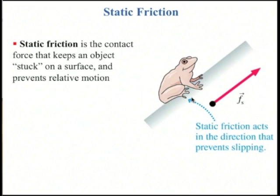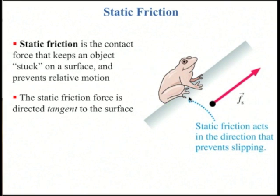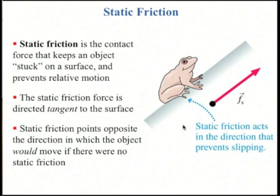Static friction is a contact force that keeps two surfaces stuck together. The static friction force is directed tangent to the surface. Here the frog is sitting on an incline and wants to slip down and to the left. So static friction points opposite to the direction in which the object would move if there were no static friction — meaning if this were a slippery surface the frog would move down to the left, so static friction points up and to the right.